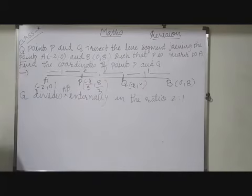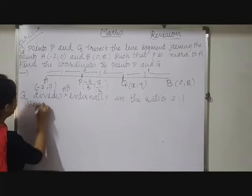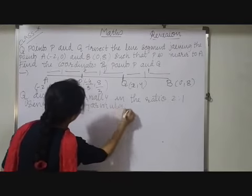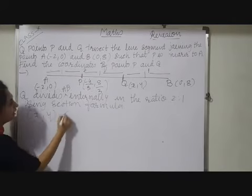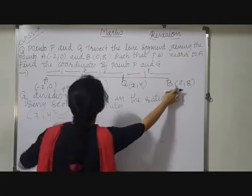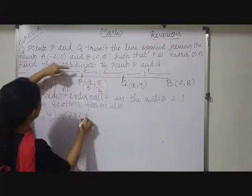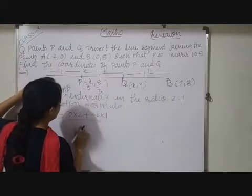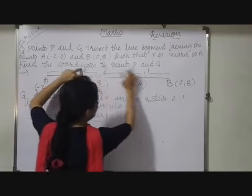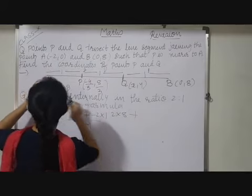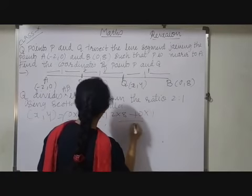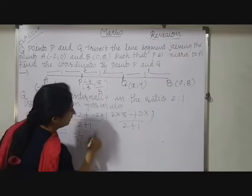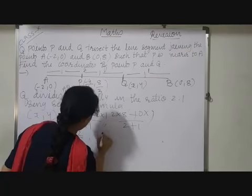So using section formula, Q coordinates are again cross multiplication. See 0 into 2 plus here also minus 2 into 1 upon 2 plus 1 comma, 2 into 8 plus 0 into 1 upon 2 plus 1. So now we have minus 2 by 3 and here 8 to the 16 by 3.